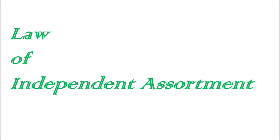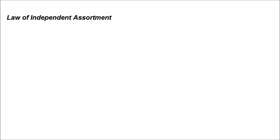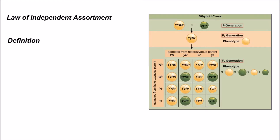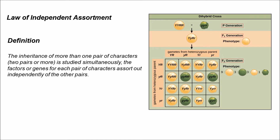What is the law of independent assortment? The definition for law of independent assortment is: the inheritance of more than one pair of characters (two or more) studied simultaneously — the factors or genes for each pair of characters assort out independently of the other pairs. It explains about the inheritance of more than one pair of characters expressed by genes, each pair exhibiting independently of the other pairs.